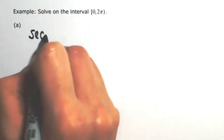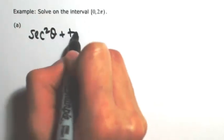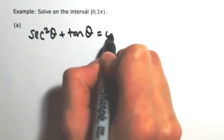For example, let's say we have the secant squared of theta plus the tangent of theta equaling 0.